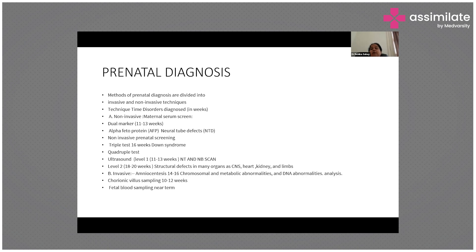NIPT - Non-Invasive Prenatal Test - was launched about five years back and is now used very widely. Its sensitivity is very high, and one might not require amniocentesis if NIPT is done; it has literally replaced amniocentesis and diagnoses all chromosomal defects. The triple test is done at 16 to 18 weeks for Down syndrome. The quadruple test is also done between 17 to 19 weeks and diagnoses chromosomal defects. Ultrasound level 1 is done at 11 to 13 weeks for nuchal translucency (NT) and nasal bone - if the nasal bone is seen, it is normal and the child will not have Down syndrome.